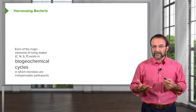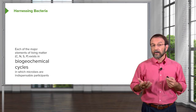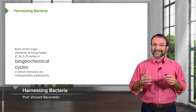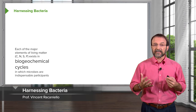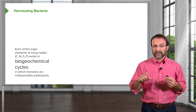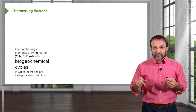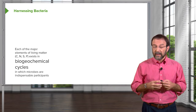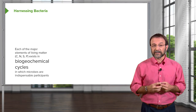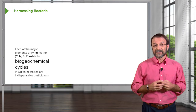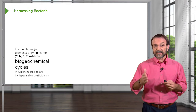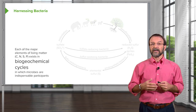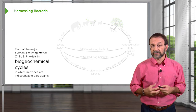Each of the major elements of living matter, which include carbon, nitrogen, sulfur, and phosphorus, exist in what we call biogeochemical cycles. They go from different forms of matter, and that's important for maintaining them on Earth. Microbes are indispensable participants in these cycles. For each of these elements there's a separate cycle, but let me illustrate just one of them — the sulfur cycle.